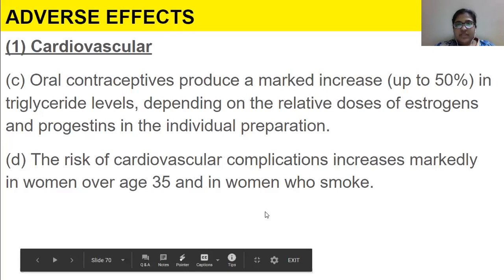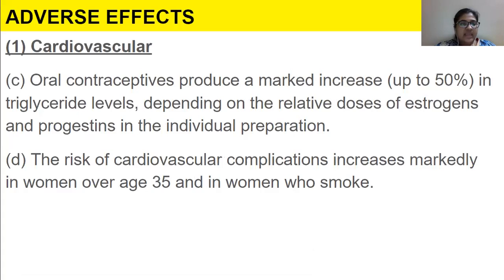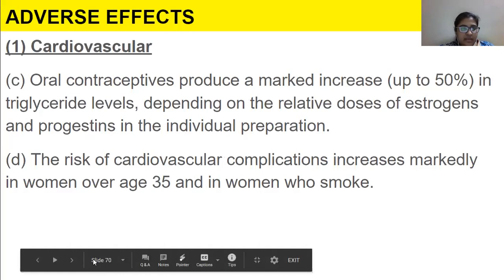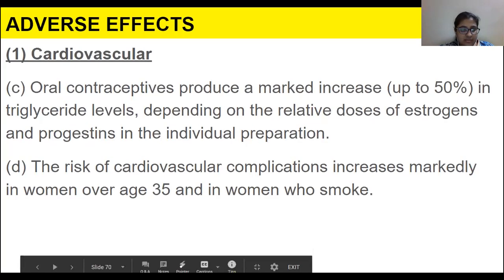Oral contraceptives produce a marked increase — up to 50 percent — in triglyceride levels, depending on the relative doses of estrogens and progestins in the individual preparation. The risk of cardiovascular complications increases remarkably in women over age 35 and in women who smoke.